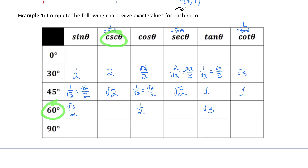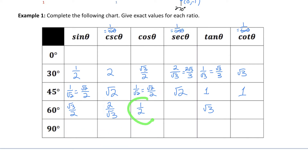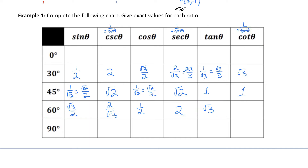Cosecant of 60: I do 1 over the sine ratio for 60, which flips it to become 2 over root 3. Secant of 60: I do 1 over the cosine of 60 ratio, so 1 over one-half, which becomes 2. And lastly, cotangent of 60: I do the reciprocal of the tan 60 ratio, so 1 over root 3, which when rationalized becomes root 3 over 3.